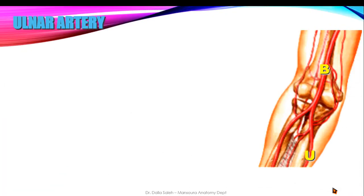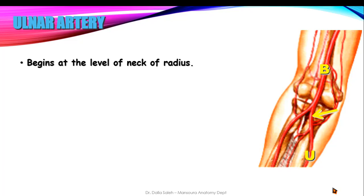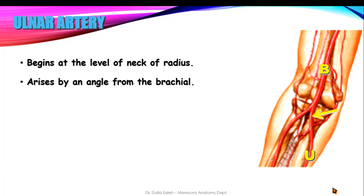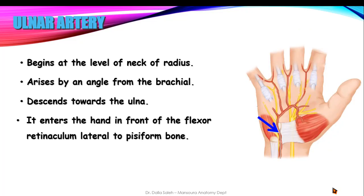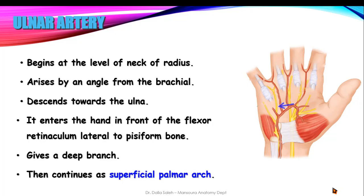The ulnar artery begins at the level of the neck of the radius and arises at an angle from the brachial artery. It descends towards the ulna on the medial side of the forearm. It then enters the hand in front of the flexor retinaculum, lateral to the pisiform bone. It gives a deep branch that joins the radial artery to form the deep palmar arch, and itself continues as the superficial palmar arch.